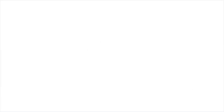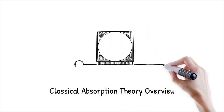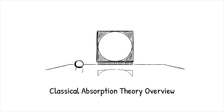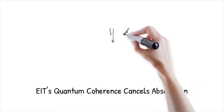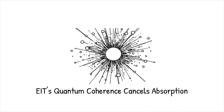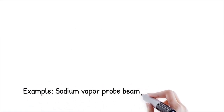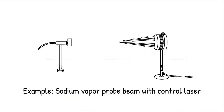Classical absorption theory predicts that atoms absorb resonant light according to fixed cross sections determined by their transition strengths. Under these models, there is no mechanism for the medium to regain transparency at the resonant frequency where absorption peaks. EIT, however, uses a coherence between atomic states to cancel absorption at that exact frequency while leaving the medium opaque elsewhere. This contrast shows how quantum coherence can override traditional absorptive behavior. Without EIT, a probe beam at the D1 line of sodium vapor is almost entirely absorbed, but with a control laser present it passes through.